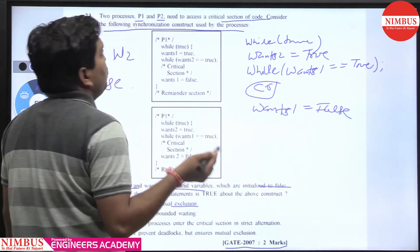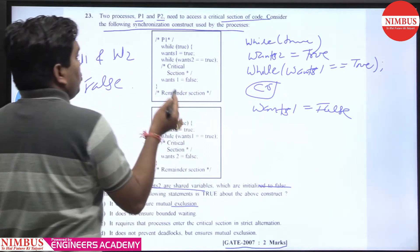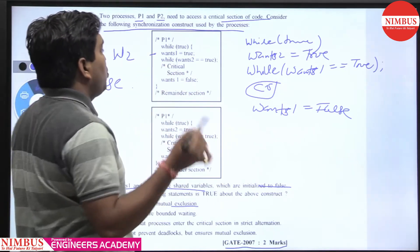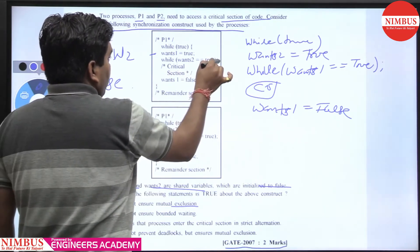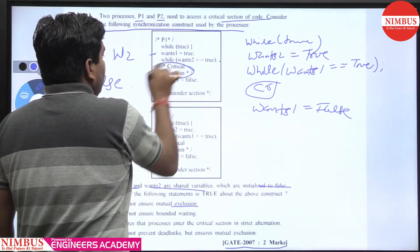Initially wants1 is false and wants2 is also false. It do the wants1 true. Now, while wants2 equal to true, that is condition false, so it will not go in that loop, it will go into the CS.